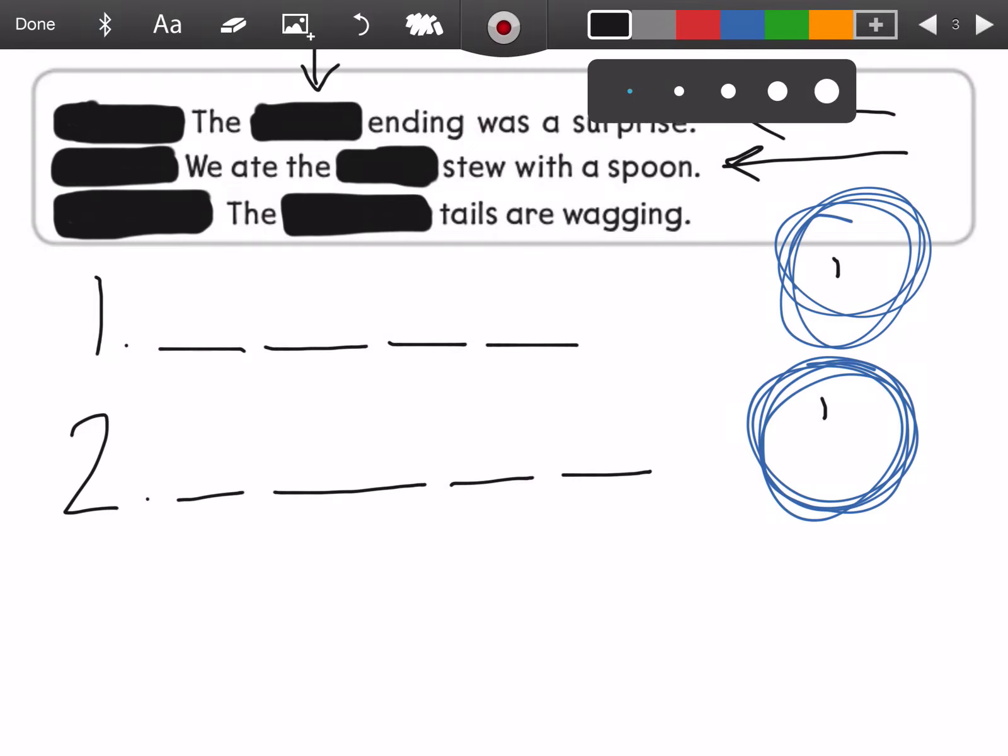Third word. Here we go. The dogs' tails are wagging. There's more than one dog and they all have a tail and all of their tails are wagging. The dogs' tails are wagging. D. O. G. S. Dogs.